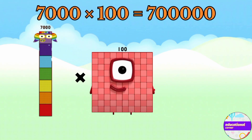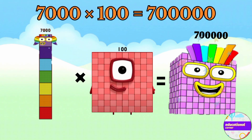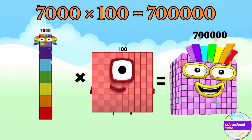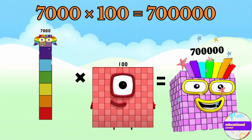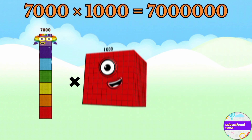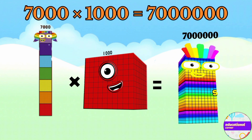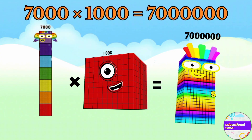7,000 multiplied by 100 equals 700,000. 7,000 multiplied by 1,000 equals 7,000,000.